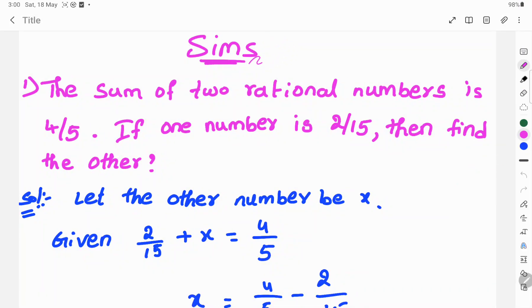Hi, welcome to Semins. Today's sum: the sum of two rational numbers is 4 by 5. If one number is 2 by 15, then find the other.